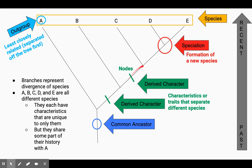So each one of these branches is leading us to a different species. So at the top we have species A, B, C, D, and E. These are all different species, okay? They have characteristics that are unique to only them. But they all share some type of history with a common ancestor.